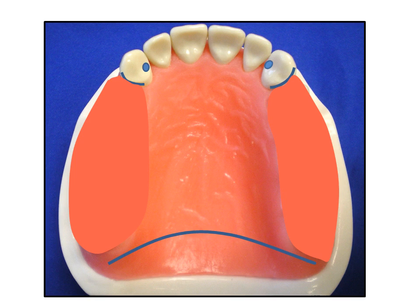The ball rest will likely be easily accessible from the adjacent embrasure space in cases where minimal vertical space exists. The fulcrum line is thus established, and is normally present in all Kennedy Class I and II partial denture designs and should be identified.